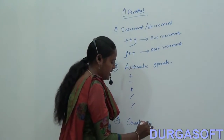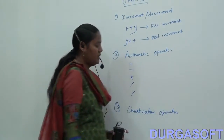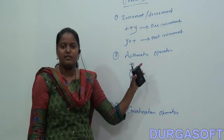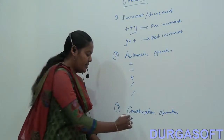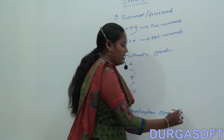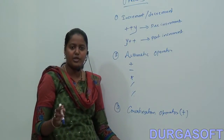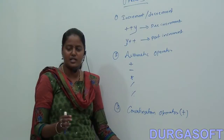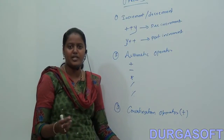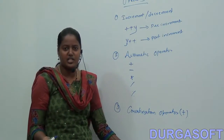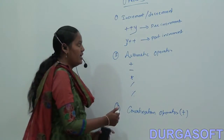The third one is the concatenation operator. We use the plus symbol for both addition and concatenation. If you perform the plus operation on two numeric variables, the result will be the sum of those variables. If you perform the plus operation on two strings, it will append the two string values together.